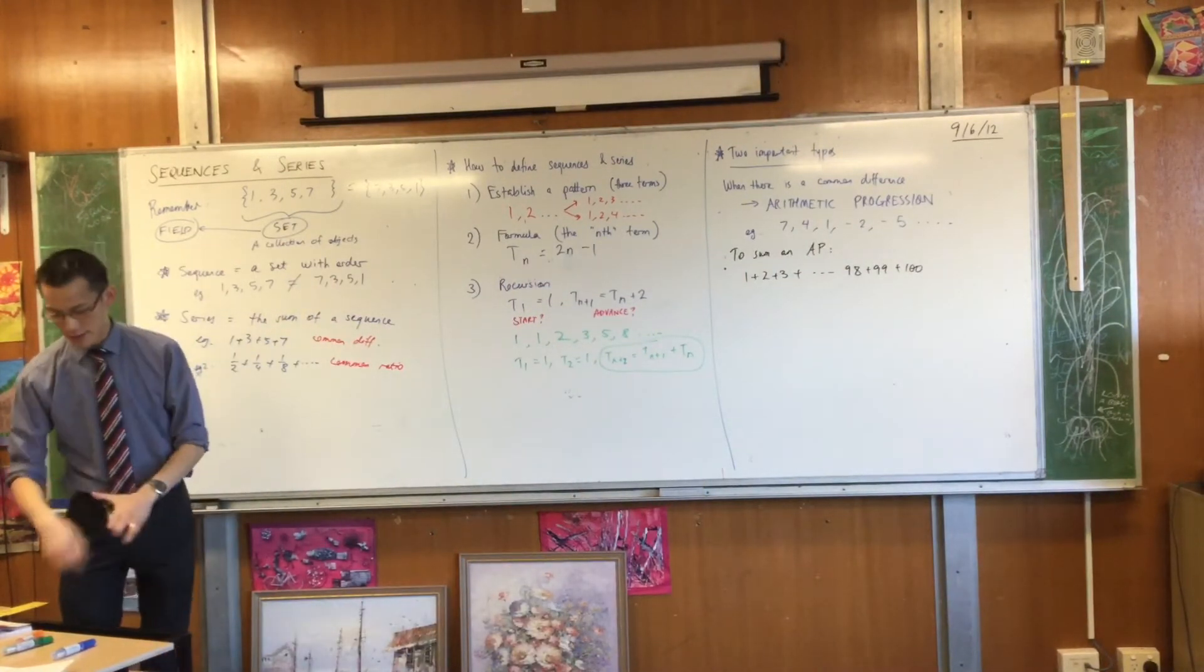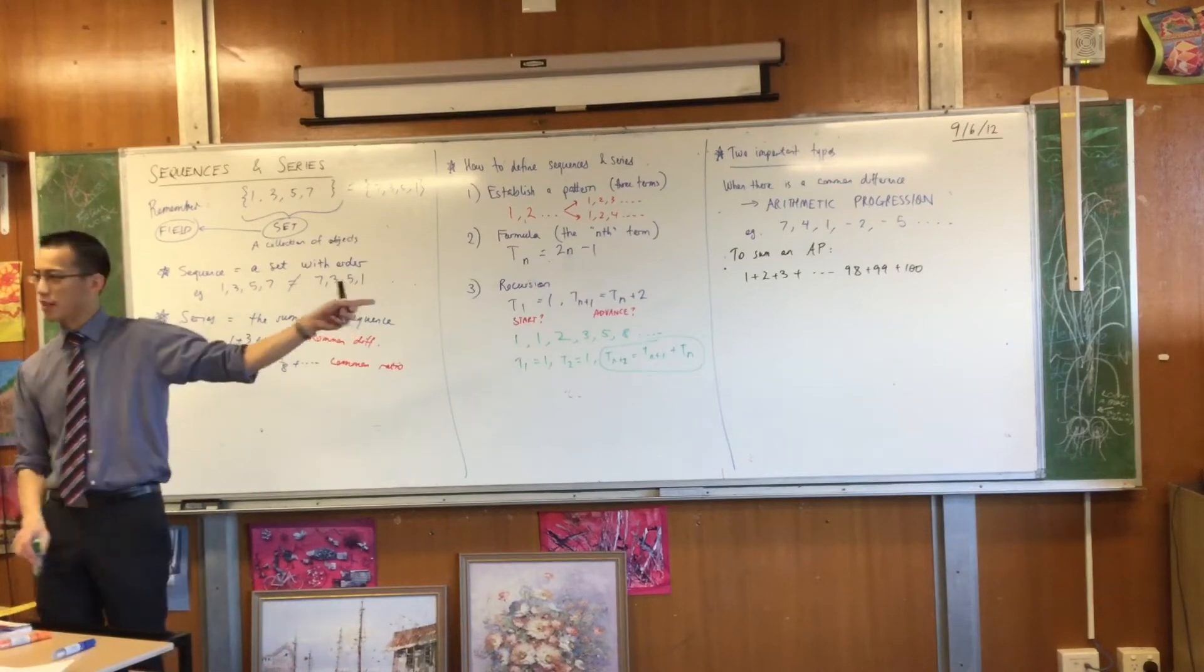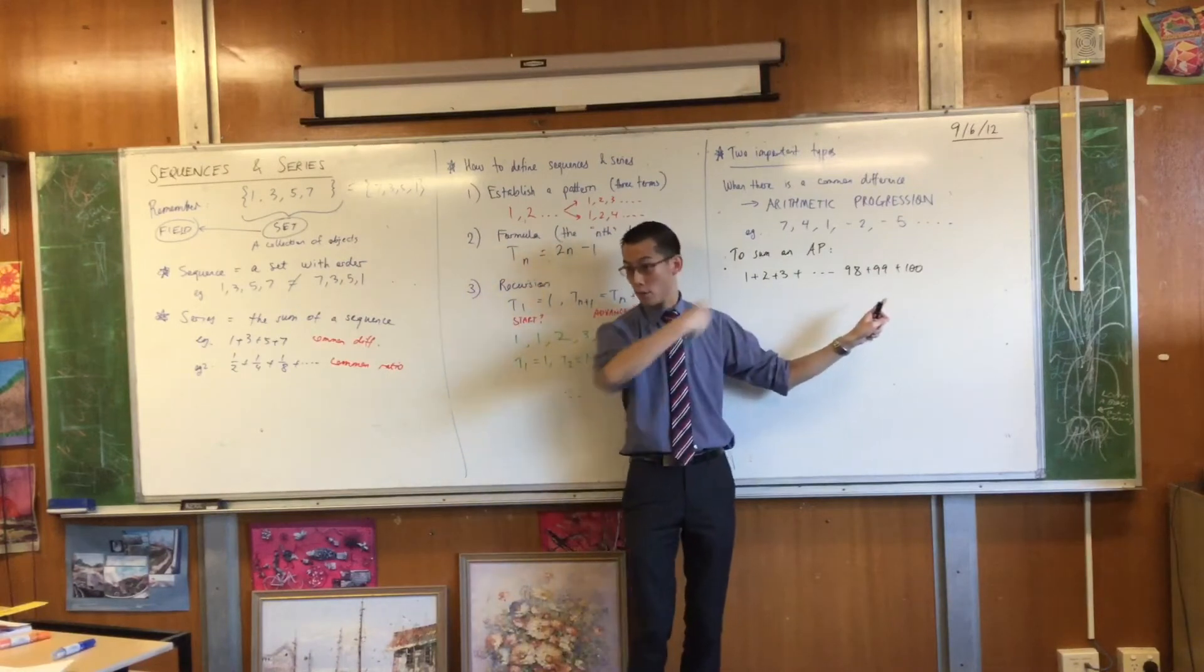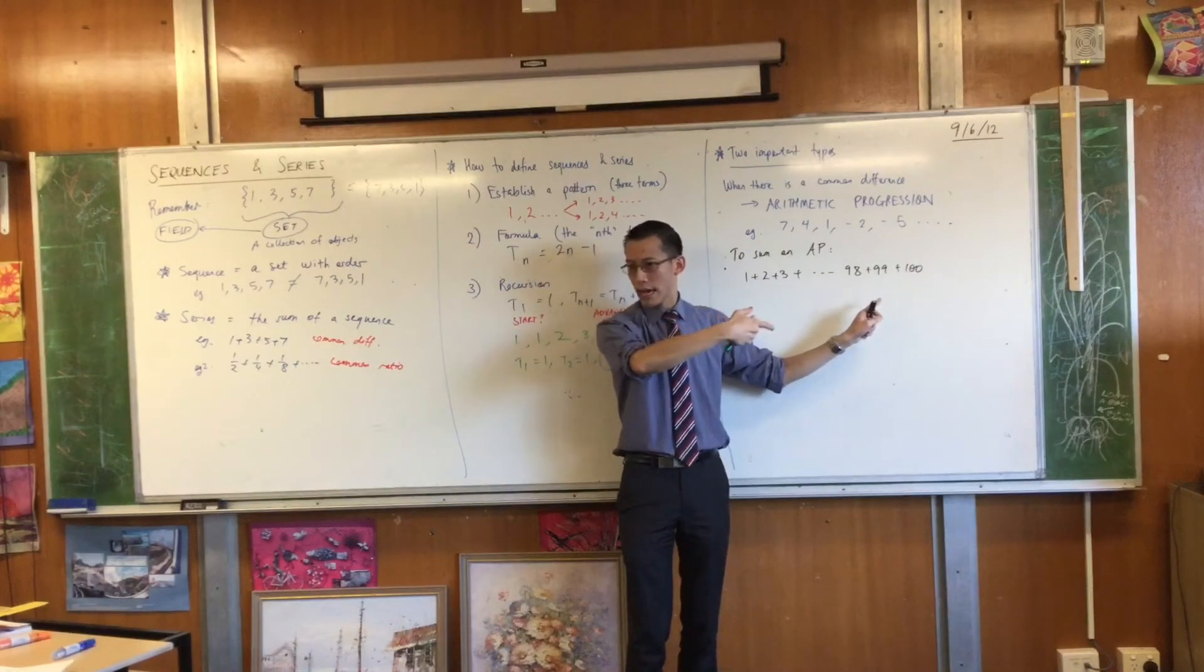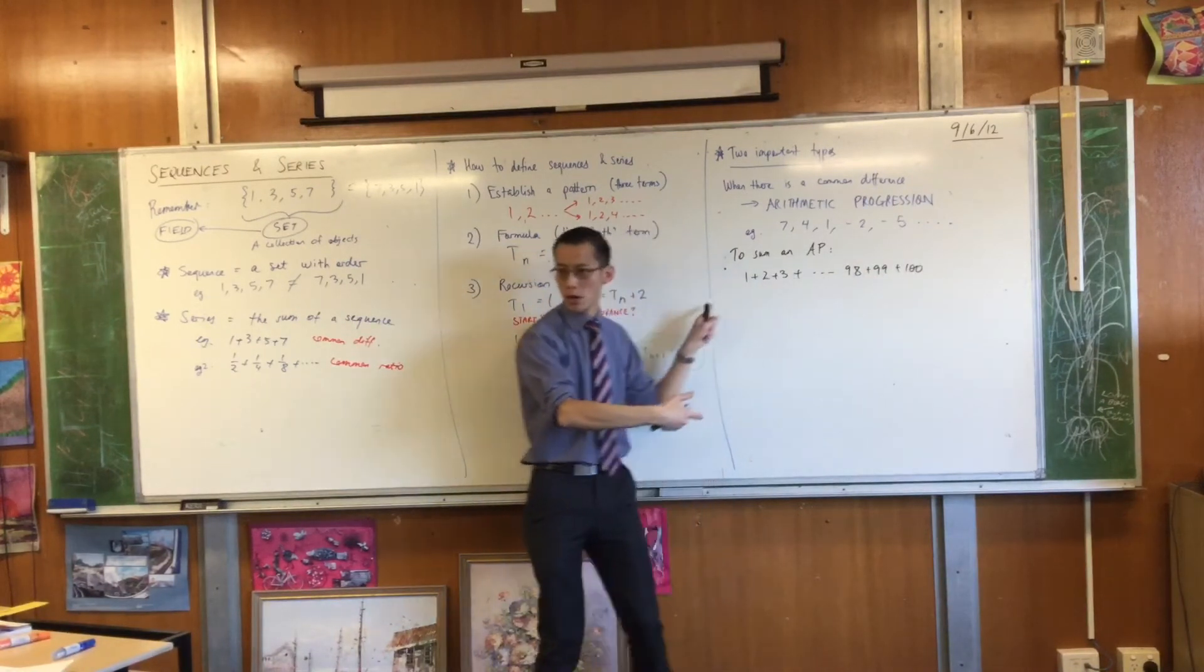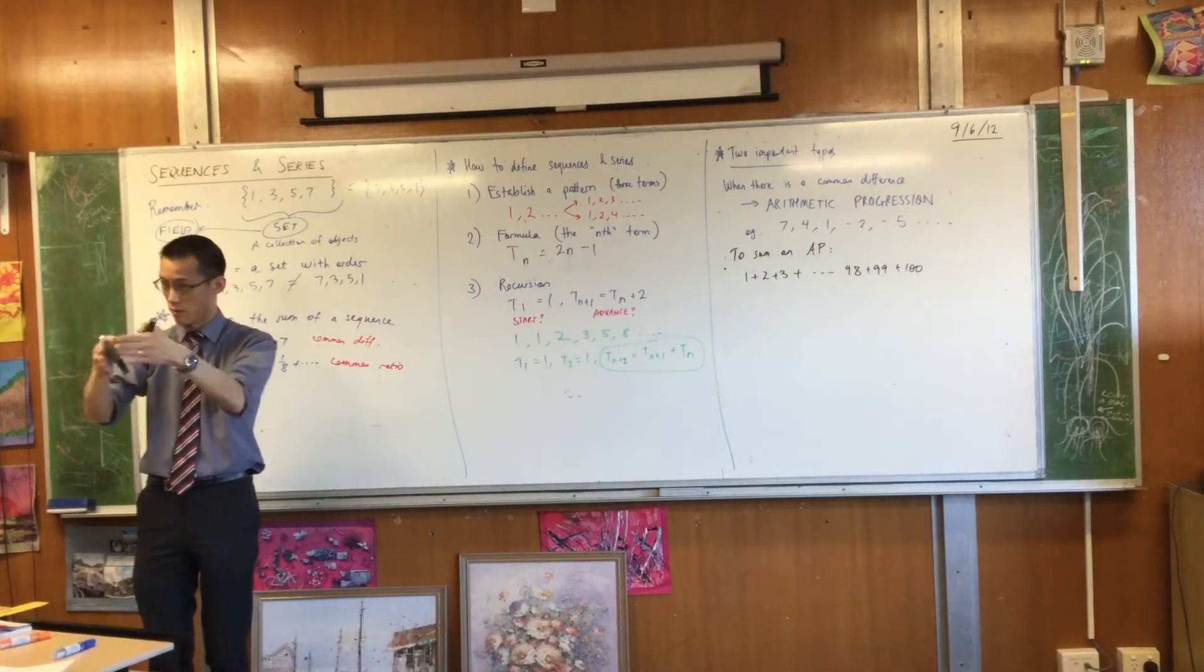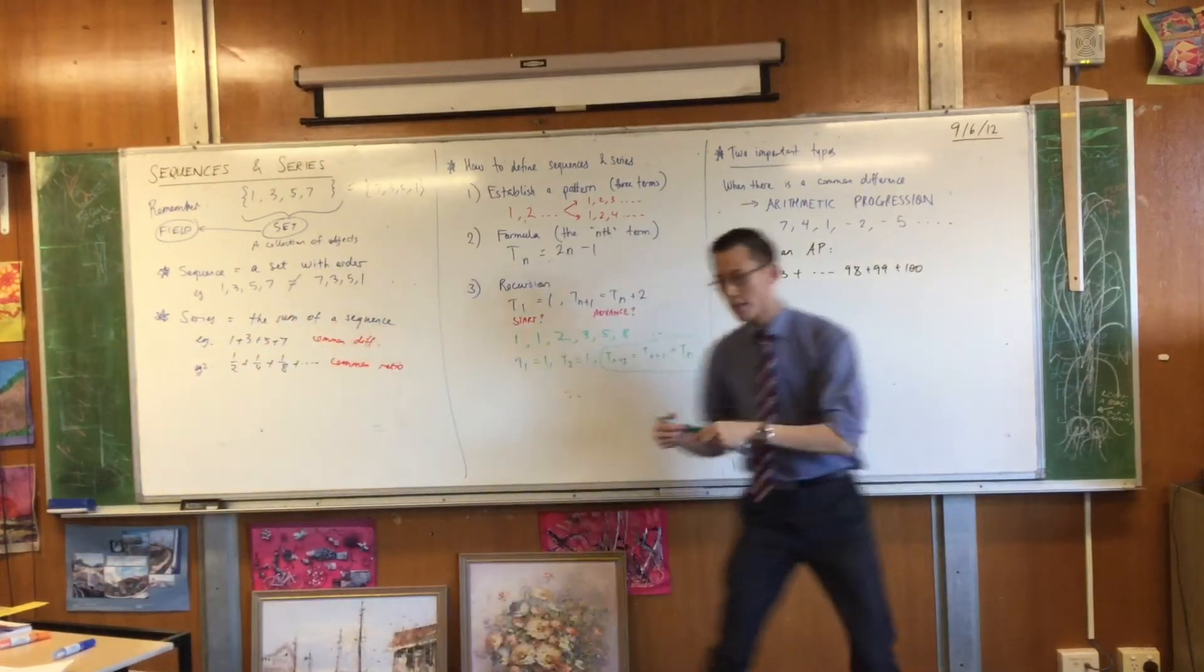Well what Gauss did was, he said, there's symmetry here. Do you notice there's symmetry here? As you get bigger and bigger going from left to right, that means you also get smaller and smaller going from right to left. And because there's a common difference, you're doing the same thing just in reverse. So therefore, it stands to reason.